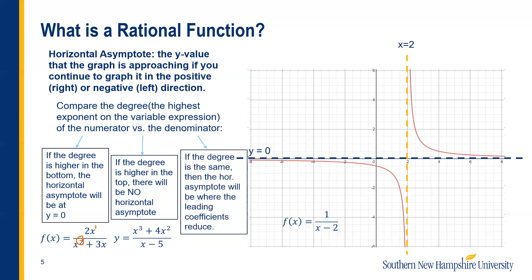The third thing that can happen is we could have the same degree in the numerator and denominator. If that's true, the horizontal asymptote will be where the leading coefficients reduce. For example, y equals 2x plus 6 over 3x minus 5 — both have degree 1. We take the leading coefficients — the numbers in front of the variable with the highest degree — and reduce them: 2 over 3. So y equals two-thirds is our horizontal asymptote.